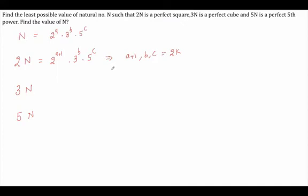Now the value of 3n is 2 raised to power a, into 3 raised to power (b+1), into 5 raised to power c. Since 3n is a perfect cube, a, (b+1), and c must each be a multiple of 3.